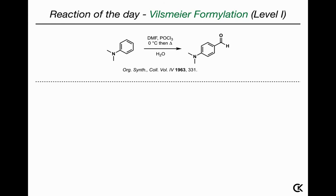Let's have a look at the actual reaction. In the Vilsmeier formylation, an electron-rich arene is treated with a substituted amide — in this case DMF — and phosphorus oxychloride, to give, after aqueous hydrolysis of an intermediate, an aryl aldehyde.